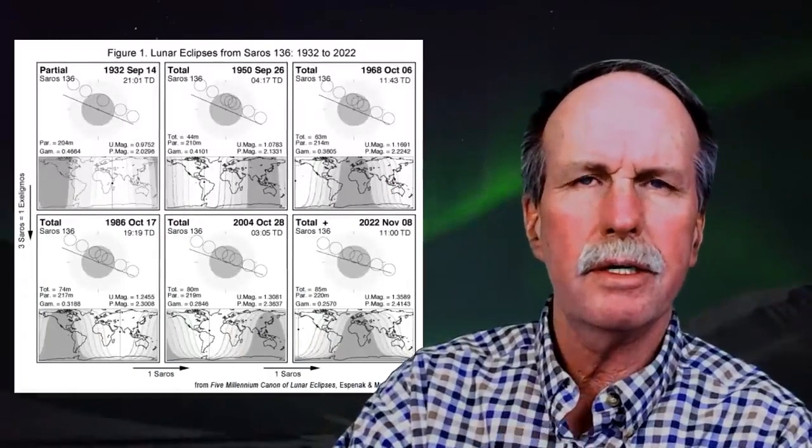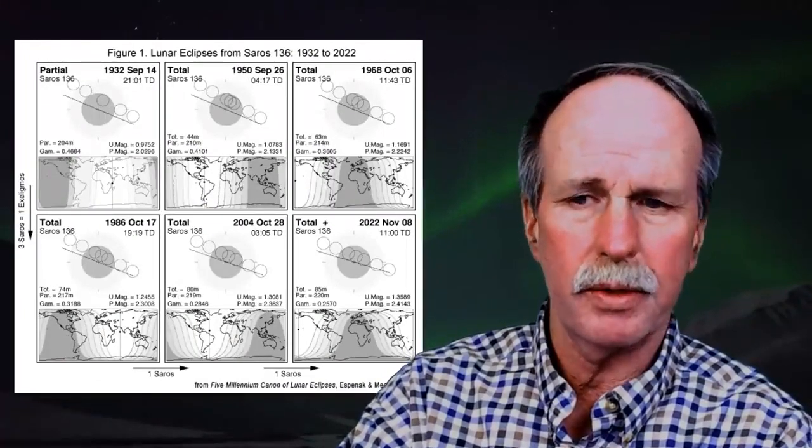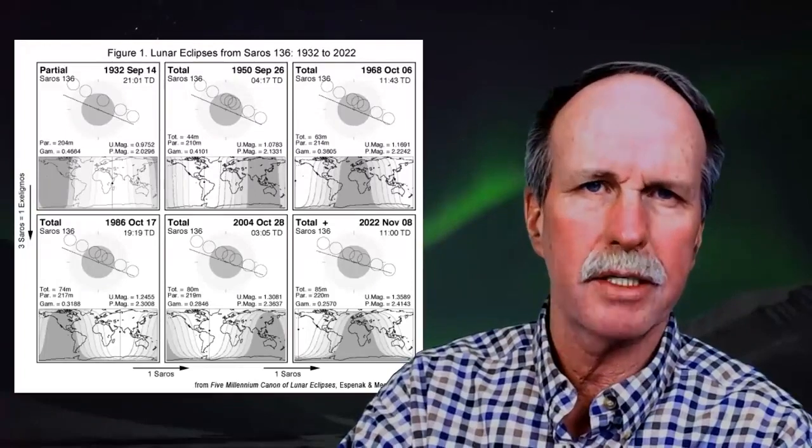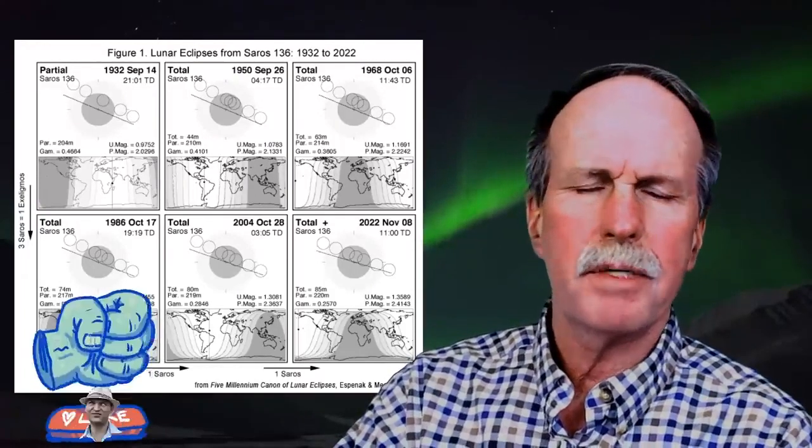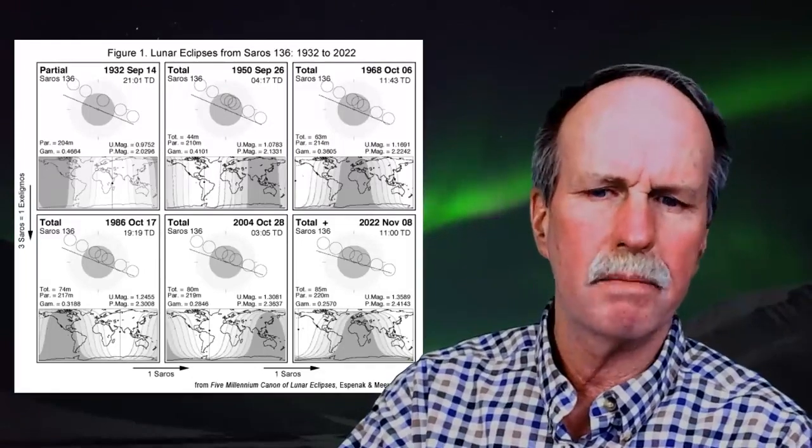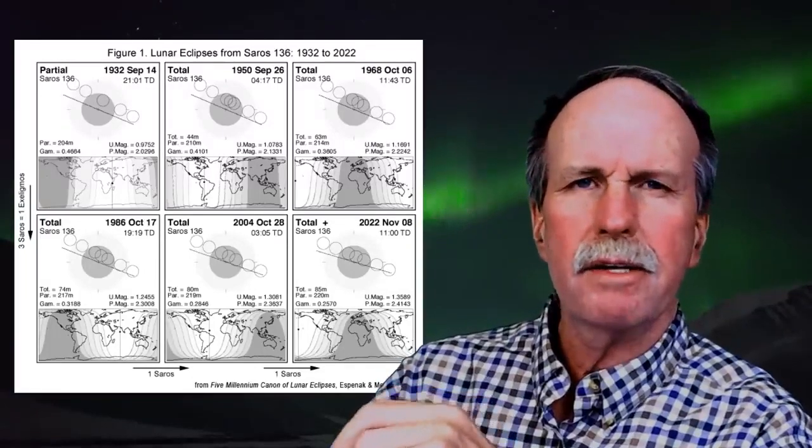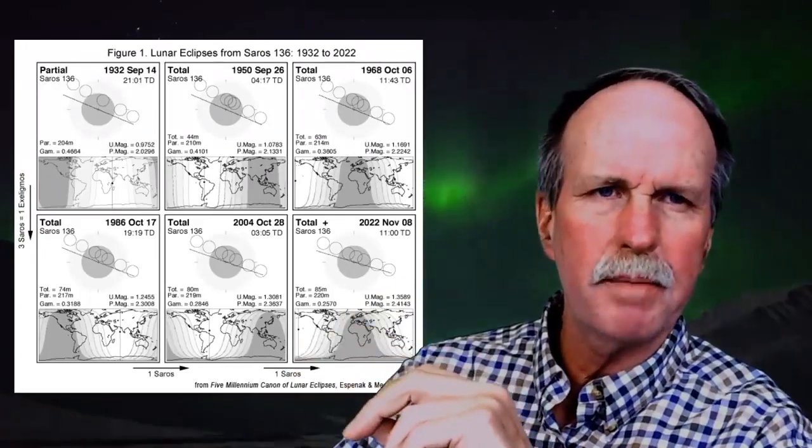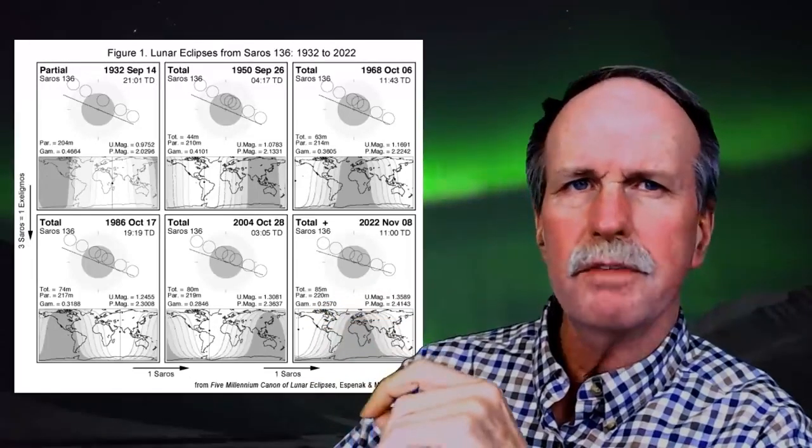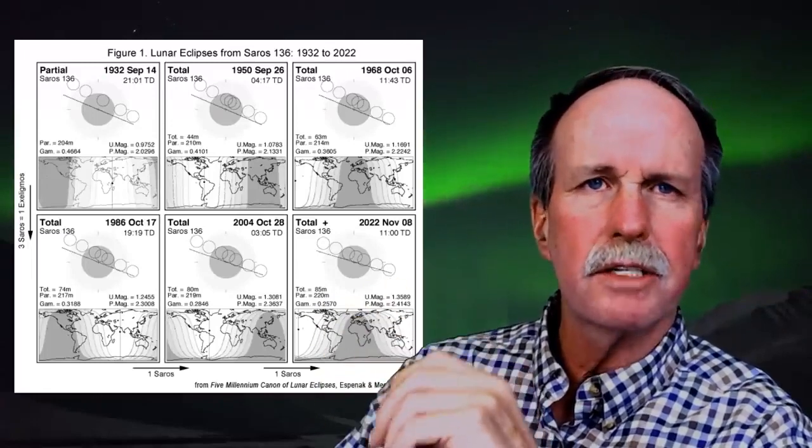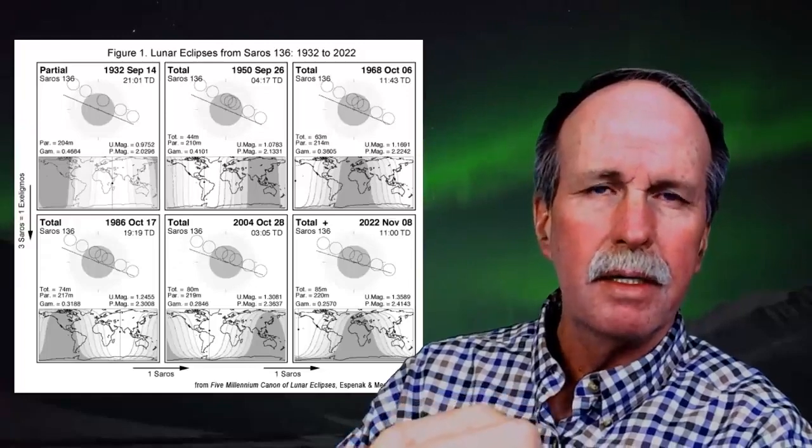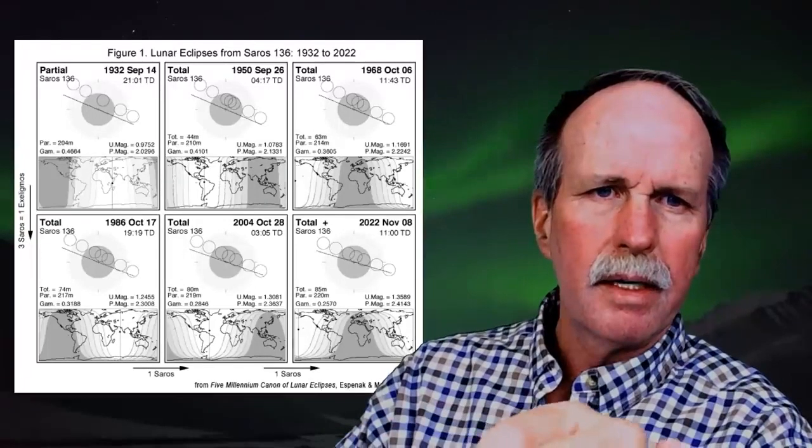Now, in the Saros cycle, there are 223 synodic months. Those are the new moon to new moon. There are 235 anomalistic months, and that's perigee to perigee, and there are 243 draconic months, which are node to node. All of these add up to 6,585 days and about 8 hours. They vary from 7 hours to about 12 or almost 13 hours. Now, the effect of the Saros cycle is that you get subsequent eclipses that have similar geometry. Now, let me show you this diagram right here. Here we have a total lunar eclipse on the 14th of September in 1932, and this is Saros cycle number 136. Notice the path that the moon takes in relationship to the umbra, the penumbra, and the ecliptic plane.